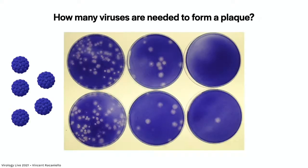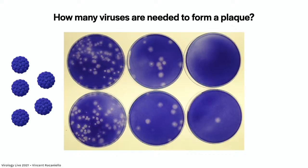This is a beautiful plaque assay I did years ago with influenza virus — three different dilutions from lower to higher. More plaques at lower dilutions; the one you would count is the middle one. The living cells are stained purple with crystal violet — that's what we use to stain our plaque assays. Where the cells have cleared because the virus killed them, you have the clearing, which is the plaque you can count.